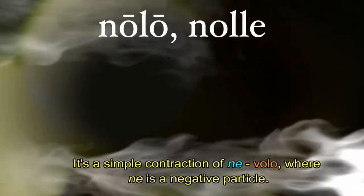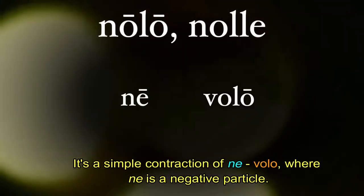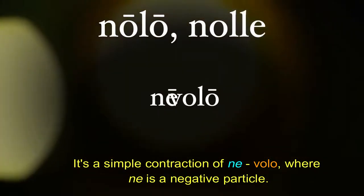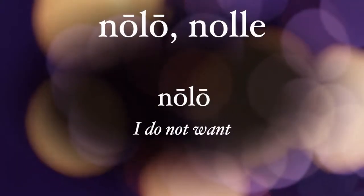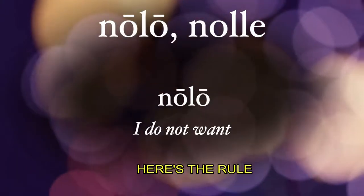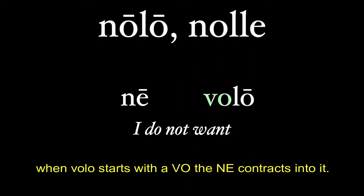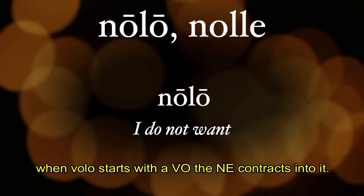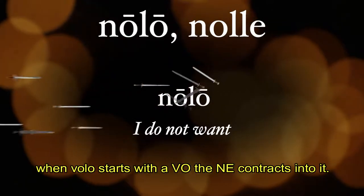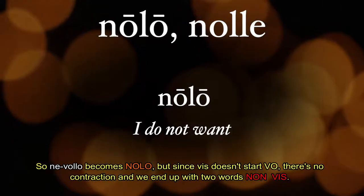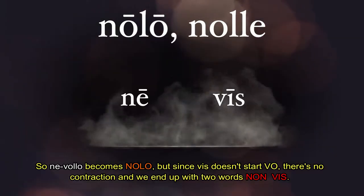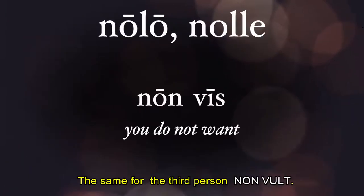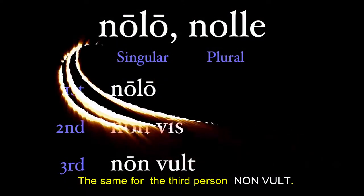Nolo nolle is a simple contraction of ne volo, where ne is a negative particle meaning 'I do not want.' When the verb volo starts with 'vo-', the ne contracts into it — so ne volo becomes nolo. But since vis doesn't start with 'vo-', there's no contraction, and we end up with two words: non vis. The same for the third person: non vult.